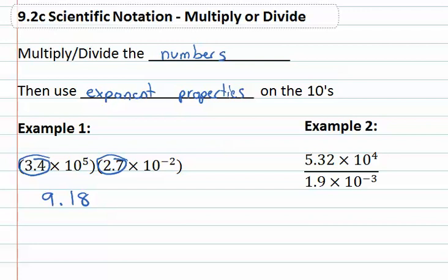Then we can use the exponent properties on the tens, multiplying ten to the fifth times ten to the negative second. We know if the bases match, we simply add the exponents. So five plus negative two is three and we end up with our final answer of 9.18 times ten to the third.